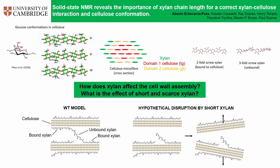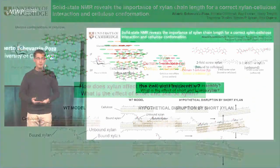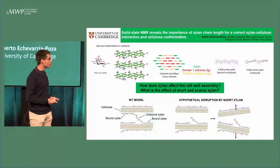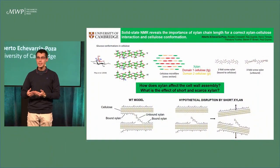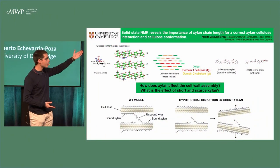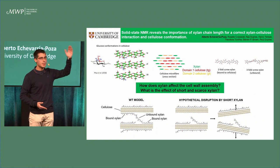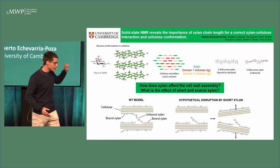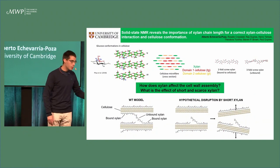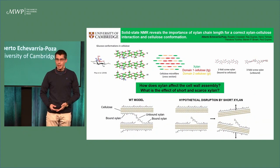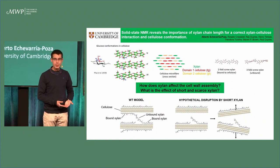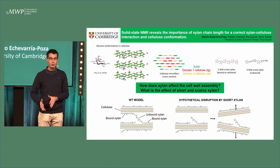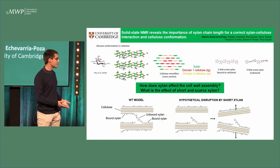In order to investigate this, we use solid-state NMR. This is a very powerful technique because it can distinguish between the different conformations of cellulose and those of xylan as well. We used wild-type plants and also some mutants that have short and less xylan.